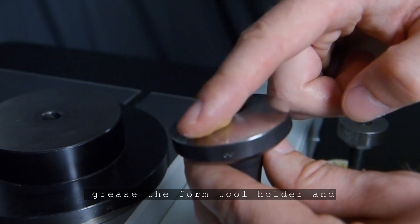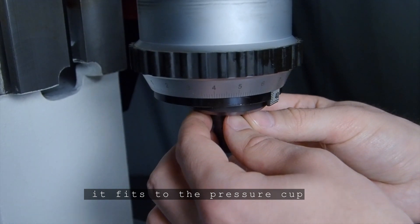Grease the form tool holder and push it back on the axle until it fits to the pressure cup.